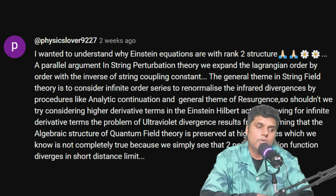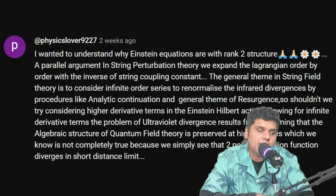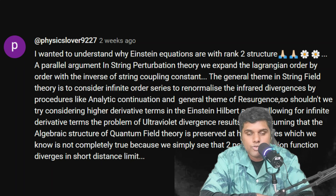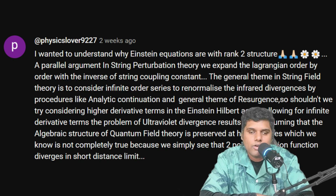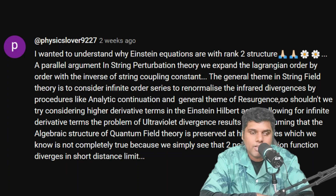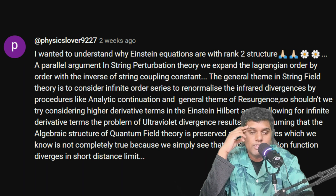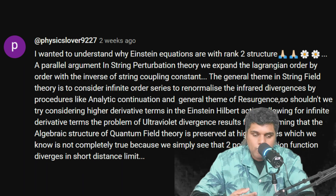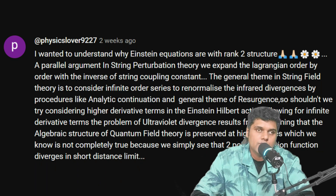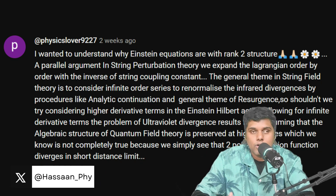The next question comes from Physics Lover, who asks why Einstein's equations have a rank-2 structure, and whether we should consider higher-derivative terms given that in string perturbation theory we expand the Lagrangian order by order in the inverse string coupling constant. If I understood correctly, you're asking why Einstein field equations have a second-derivative structure and why we don't consider higher-derivative terms.